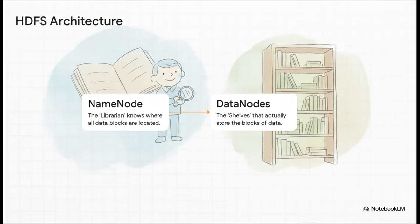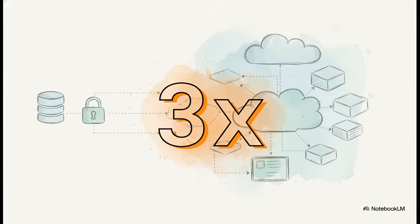But what if one of those shelves just breaks? Well, HDFS is ready for that. By default, it makes three copies of every single piece of data and scatters them across different servers. That's what this 3x represents. It means you can lose a server, you can even lose a second server at the same time, and your data is still completely safe. That right there is fault tolerance in action.